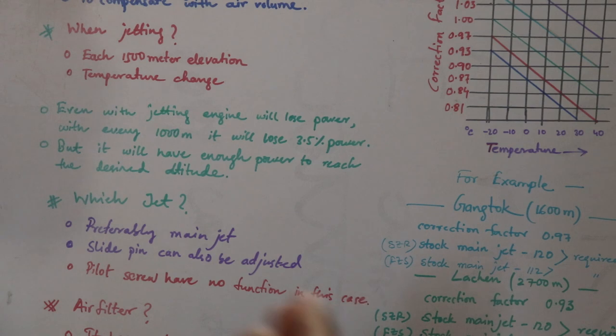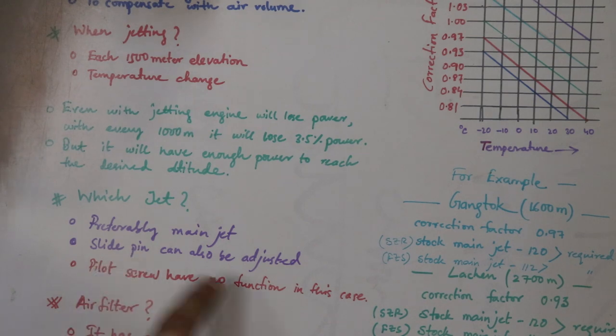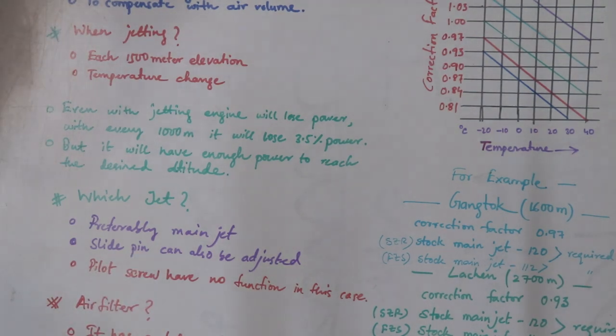So next one, which jet I need to tune? To maintain AFR there are many circuits interconnected with each other in carburetor. There is pilot circuit, needle circuit, and main jet circuit. Now if you don't have all these parts then you can readily go and change main jet. That will help you out in these scenarios. Most of the time that will not be the best option, but that is more than sufficient.